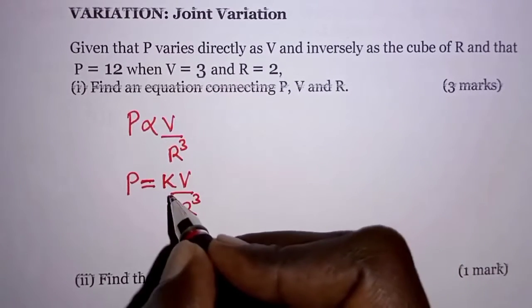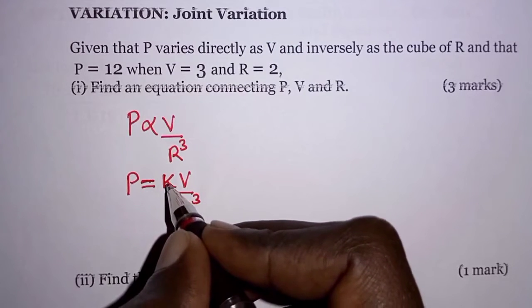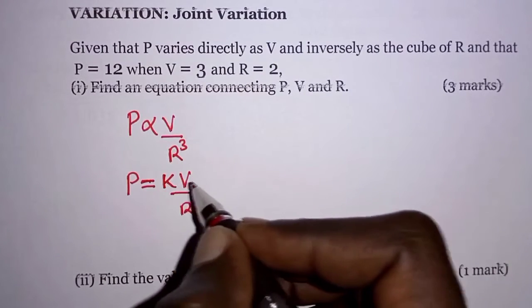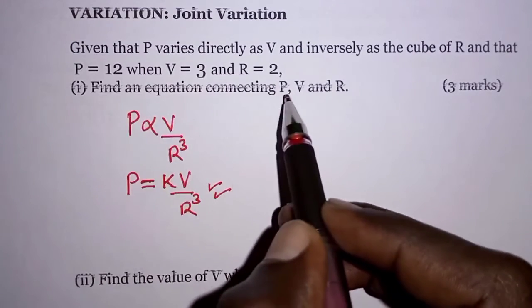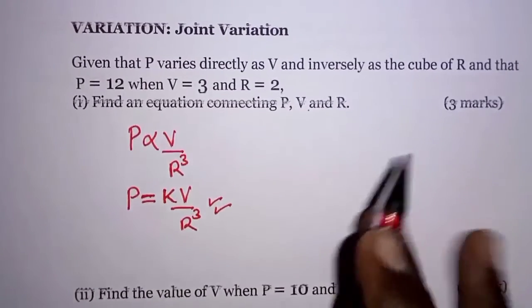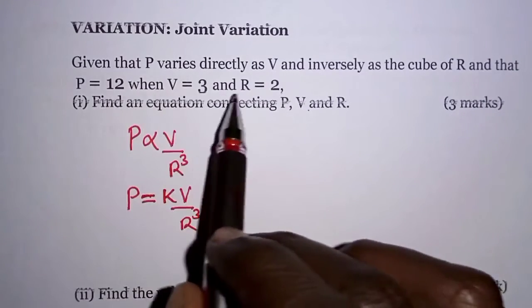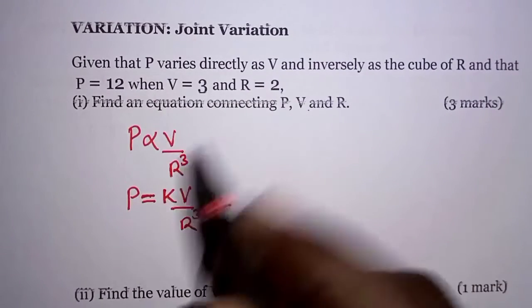Now the task here is to determine the actual value of K, and when we substitute it in this equation here, we shall have the equation connecting P, V and R. Now we are given the values of P, V and R, and that should help us get K.